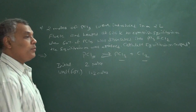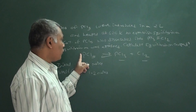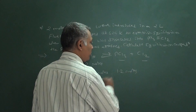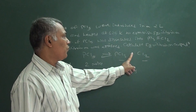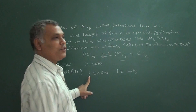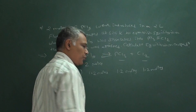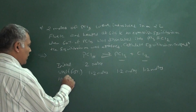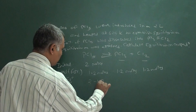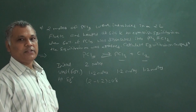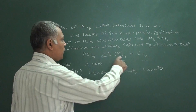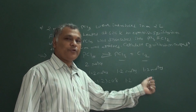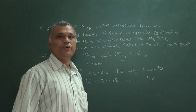From the equation, if 1.2 moles of PCl5 are used, then 1.2 moles of PCl3 are produced and 1.2 moles of Cl2 are produced. So at equilibrium: PCl5 remaining = 2 minus 1.2 = 0.8 moles; PCl3 = 0 plus 1.2 = 1.2 moles; Cl2 = 0 plus 1.2 = 1.2 moles.